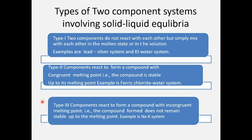As we all know, the types of two-component systems involving solid-liquid equilibria are of three types. Type 1: components do not react to each other — we studied the lead-silver system. Type 2: components react to form a compound with a congruent melting point — we studied the ferric chloride-water system. In today's class we mainly deal with Type 3: components react to form a compound with an incongruent melting point.